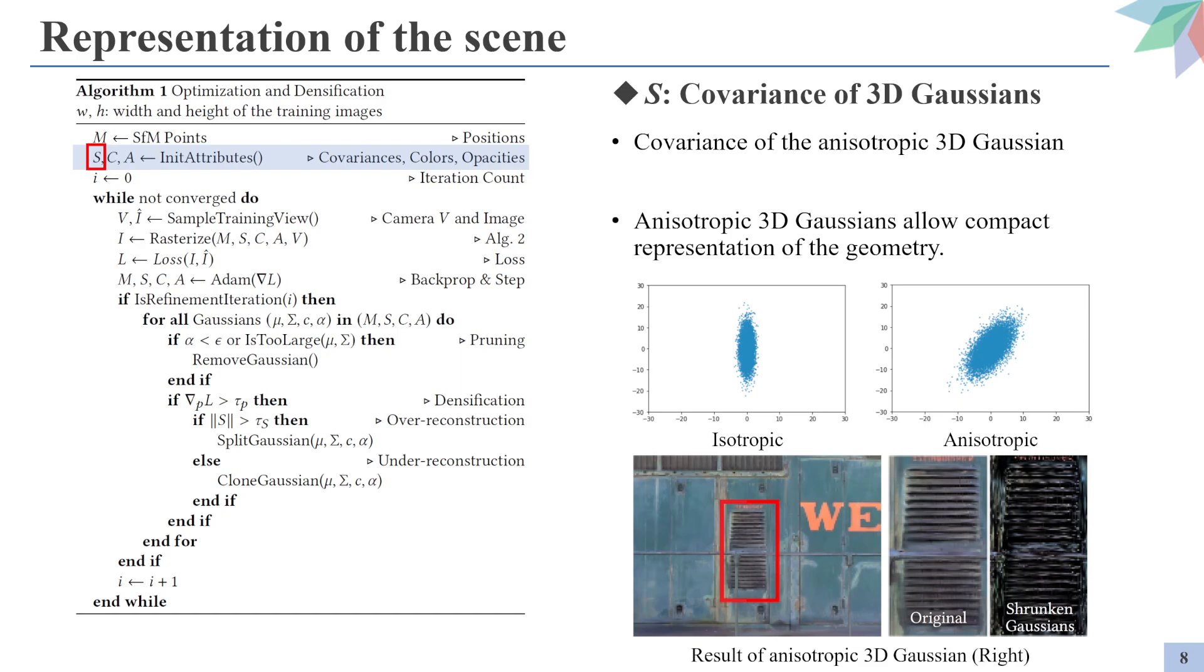And as we all know, we also need variances to represent the Gaussian distribution, so we also need to initialize the covariance for the 3D Gaussians. The authors define the Gaussians as anisotropic because it can better represent the scene as in the bottom image. The difference between an isotropic Gaussian and an anisotropic Gaussian is that the variance is not necessarily aligned to the axis for the latter.